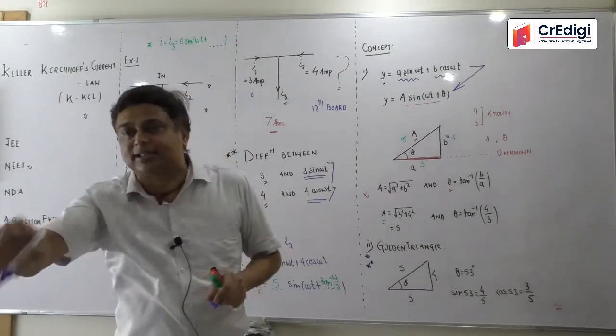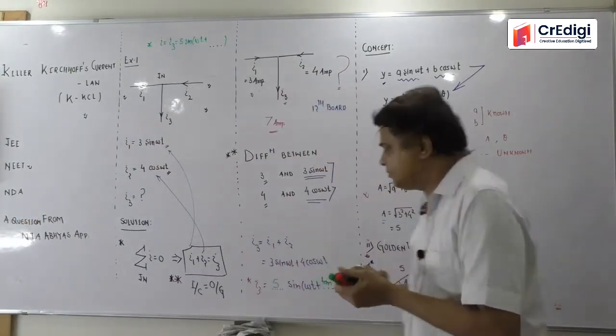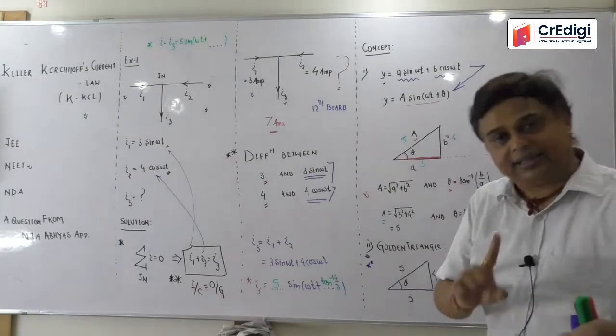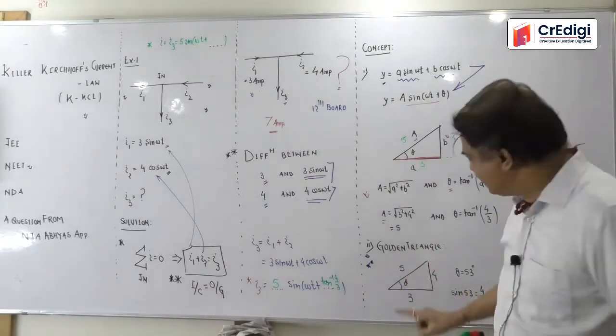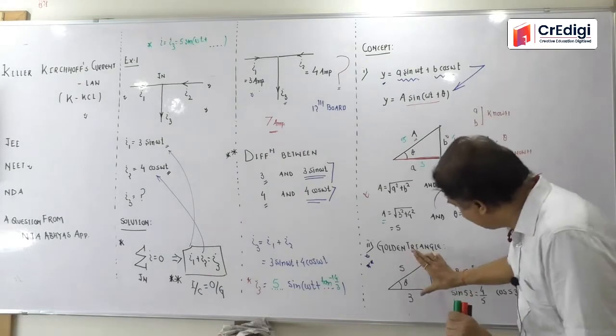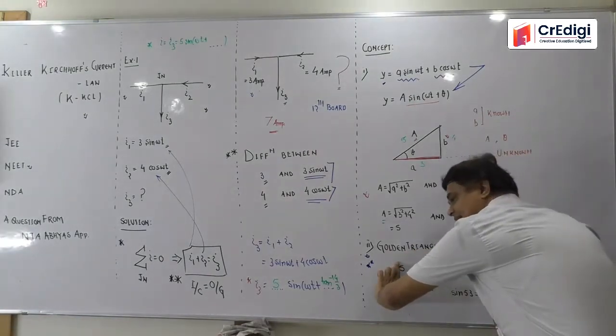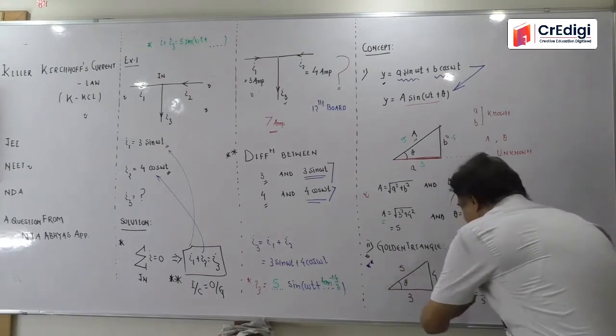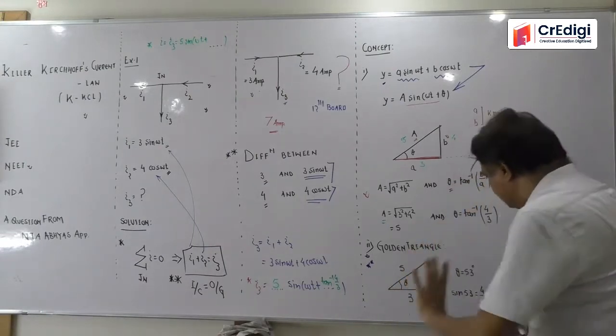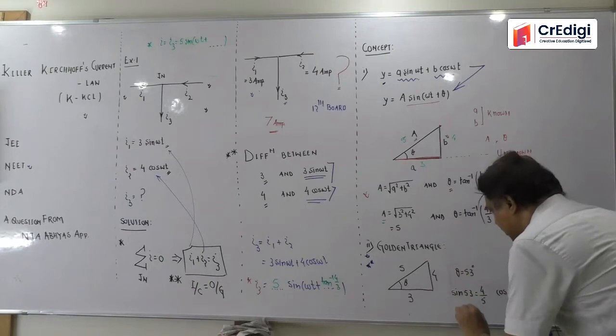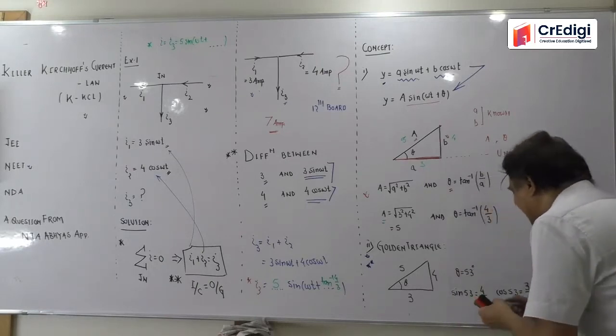If you talk about this theta value, apart from this, you don't have to remember anything. When I finish this lecture and leave, then I will ask you: sir, do you remember? When you remember, only then will I leave, not before that in any case. What to do? Yes, 3, 4, 5 written. Angle is how much? This is 53 degree. You should also remember this.